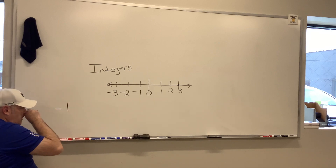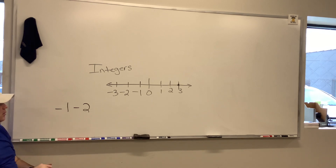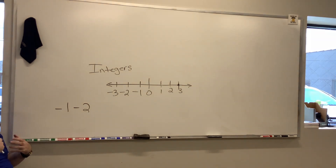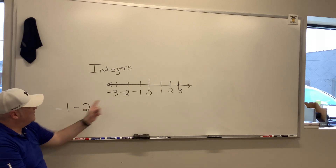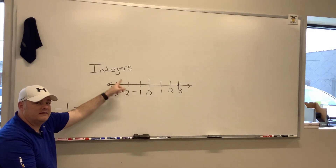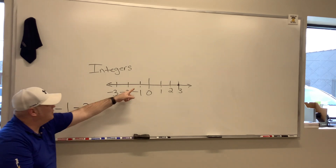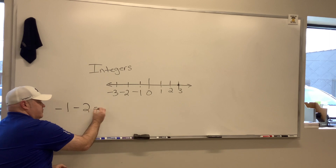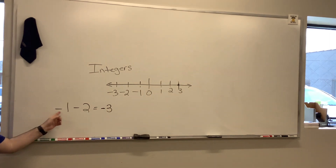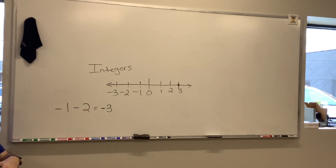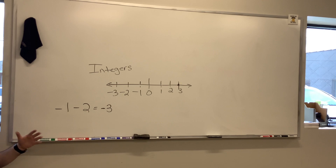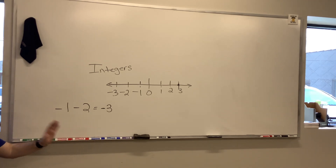Another example: negative 1 minus 2. So not only are we starting at a negative, but we're going further in the negative direction. Starting at negative 1, I move 2 steps in the negative direction and land at negative 3. That's like owing someone a dollar, then borrowing 2 more — now you owe $3. So you can be positive and get bigger, positive and go negative, negative and go positive, or negative and go further negative.